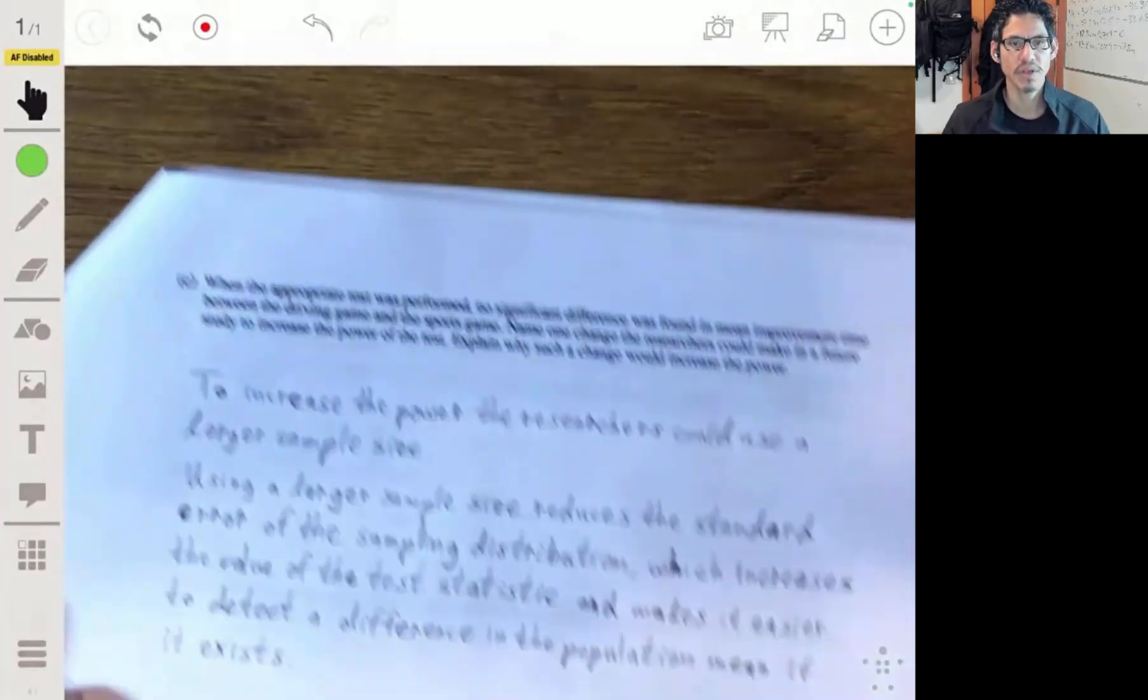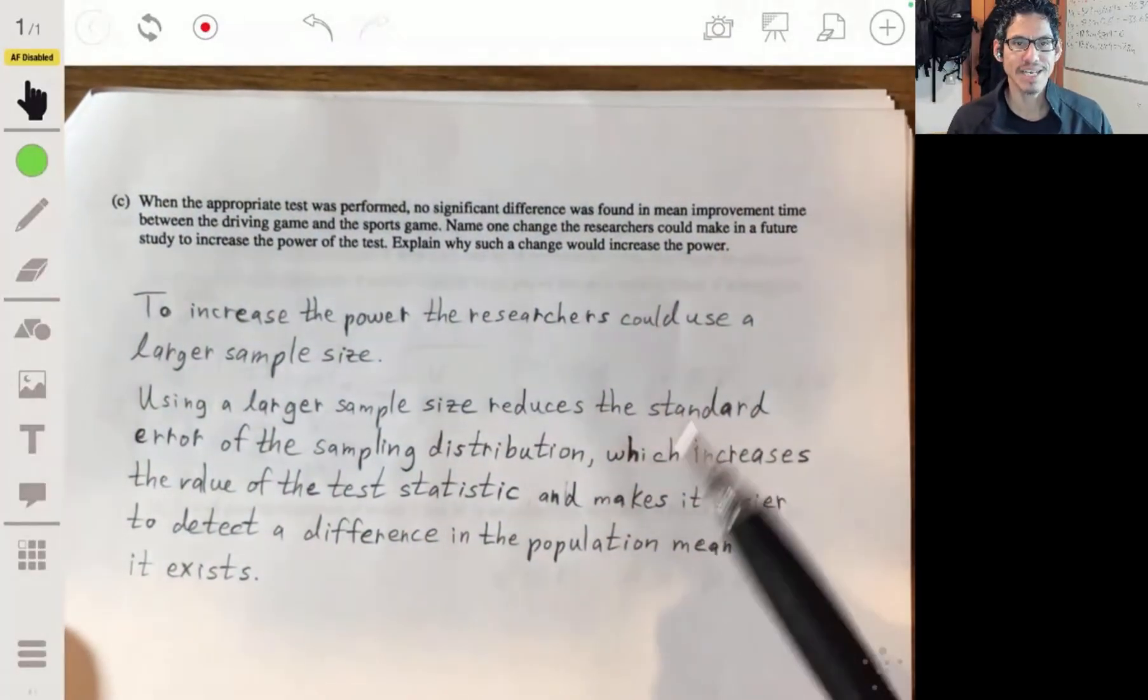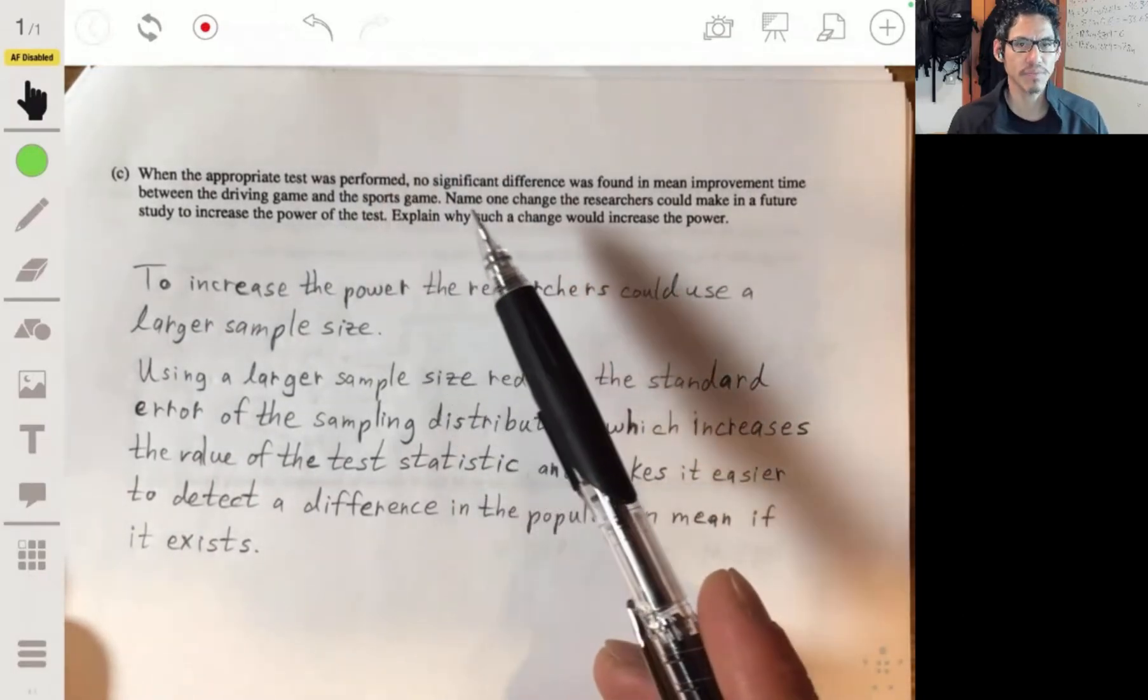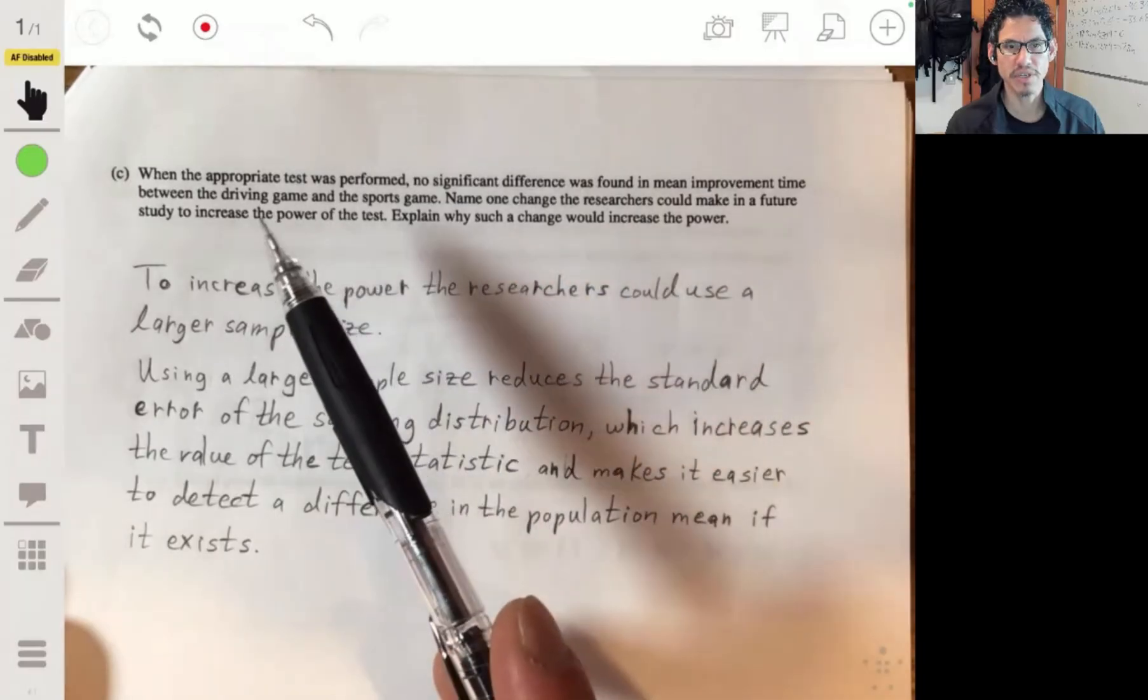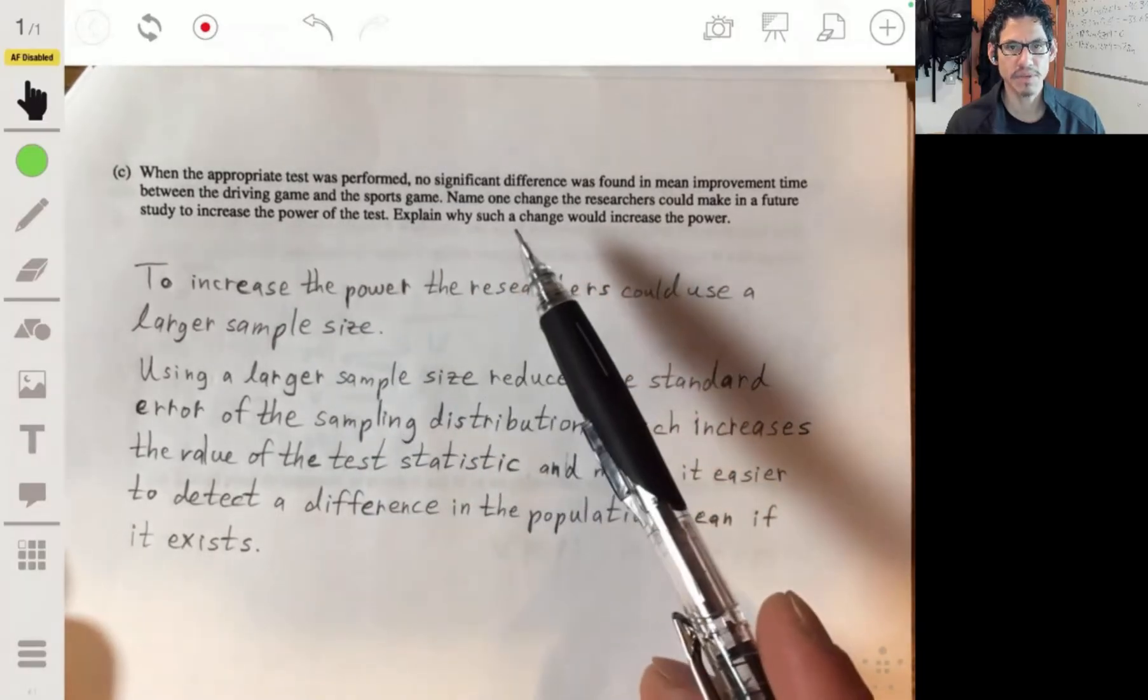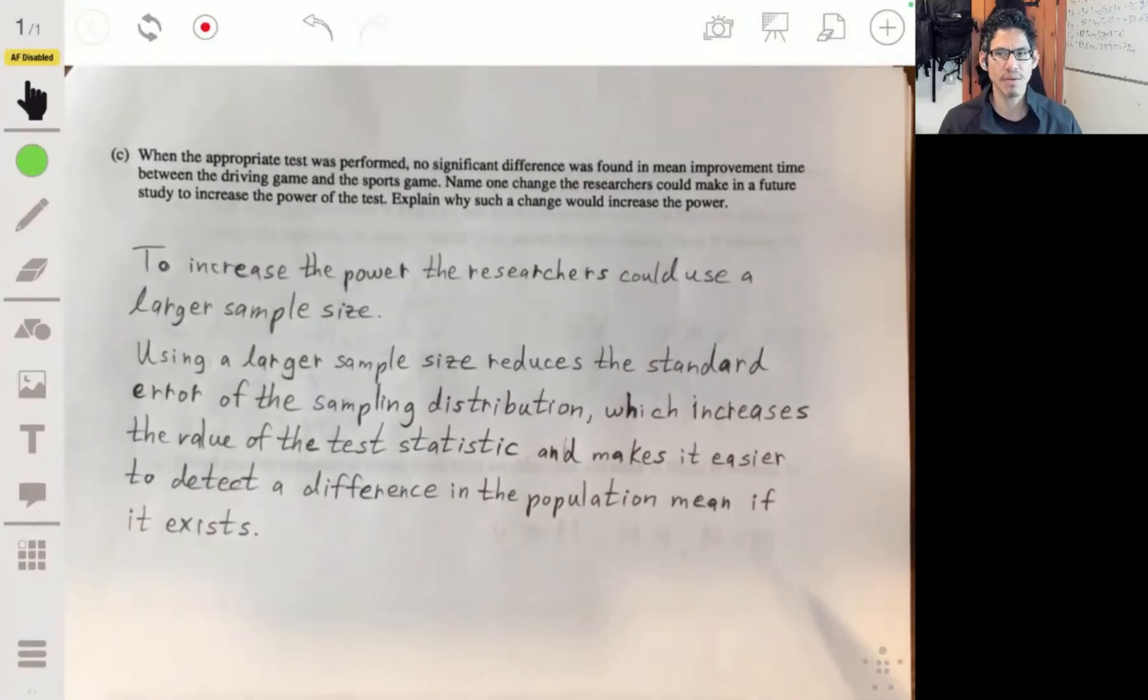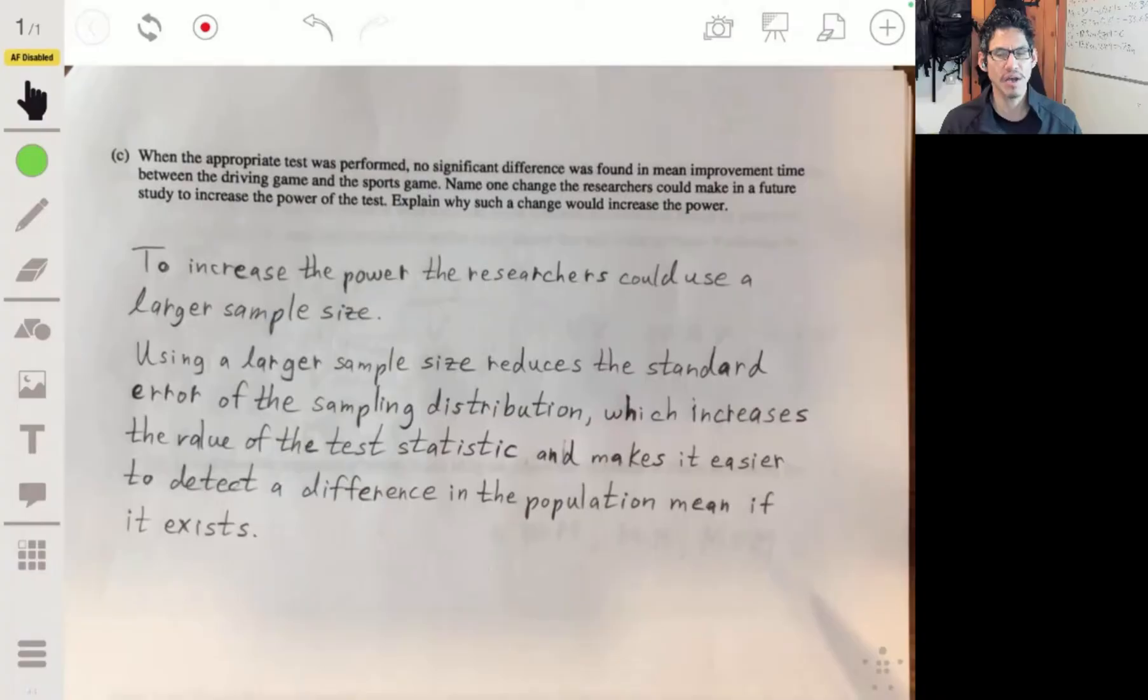And the last part is talking about power. It says when the appropriate test was performed, no significant difference was found in mean improvement time between the driving game and the sports game. Name one change the researchers could make in a future study to increase the power of the test. Explain why such a change would increase the power. Remember power—it doesn't actually tell you what power is, it doesn't actually test you to or ask you to explain what power is. But having a higher power is better. It's basically reliability. Like the higher the power, the more reliable your test is, the more certain you can be that you're going to come to the right results.